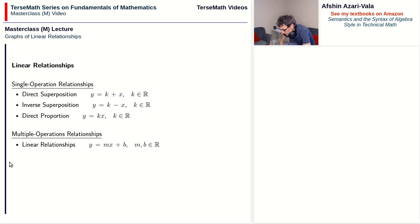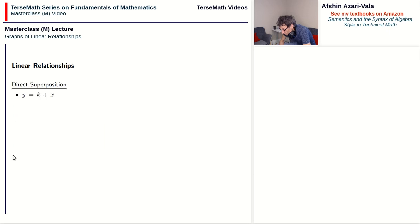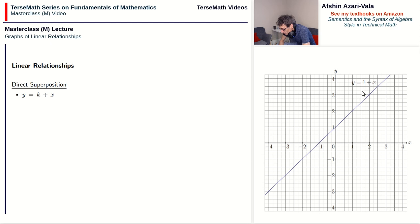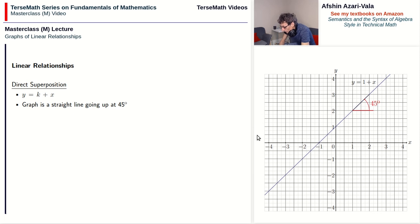Now let's look at each single-operation relationship in turn. For direct superposition, the equation is y equals k plus x, with k being a constant. Here is an example with k equal to 1: y equals 1 plus x. The graph is a straight line going up at 45 degrees. That is expected because x and y increase and decrease by the same amounts. For the 45-degree angle to show itself, you must have equal-sized units on the x and y axes.